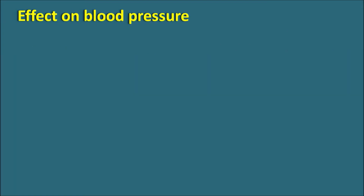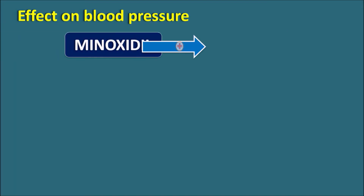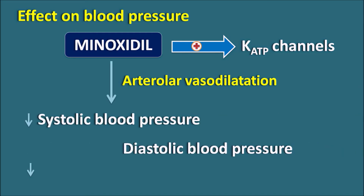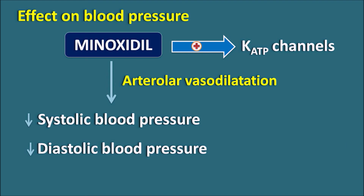What is the effect of Minoxidil on blood pressure? Minoxidil is an activator of K-ATP channels, which are responsible for vasodilatation. These ATP-sensitive potassium channels are present at various organs including the cardiac system, vascular smooth muscle, neurons, and pancreatic beta cells. At the vascular smooth muscle, Minoxidil stimulates these channels, producing vasodilatation — particularly arterial vasodilatation — thereby reducing both systolic and diastolic blood pressure.